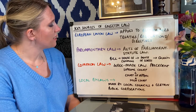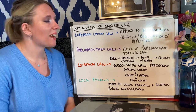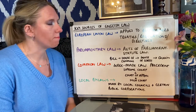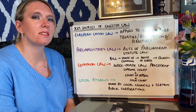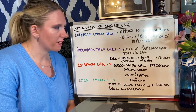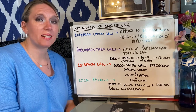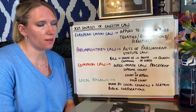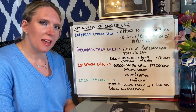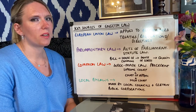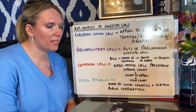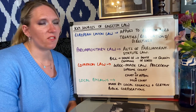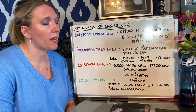Another key source is parliamentary law. This is actually our primary, first and foremost type of law in Britain. These are also referred to as acts or acts of parliament. For example, when you look at voluntary manslaughter, we talk a lot about the Coroners and Justice Act 2009 — that is an act of parliament. In our country, parliamentary law is supreme, meaning everybody must follow it; it is binding on all. You may also see this referred to as statute law or statutes.